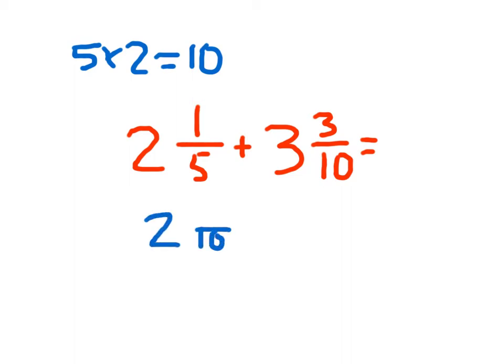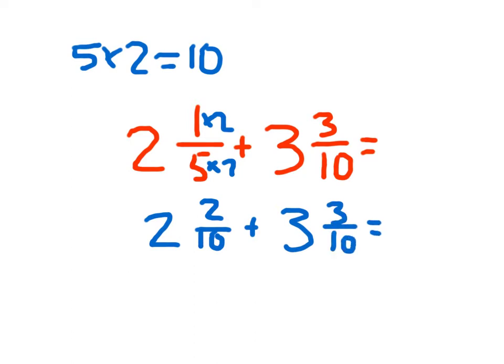We keep the whole portion the same — the two stays the same — and we multiply the numerator and denominator by two, because we want to get to tenths. One times two is two. The other denominator is already at ten, so we can just write that mixed number there. Now this looks like the previous problem with like denominators — we add the fractional parts first: two-tenths plus three-tenths equals five-tenths.